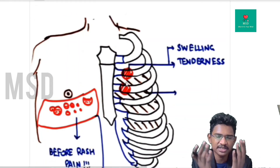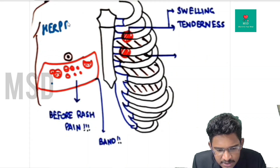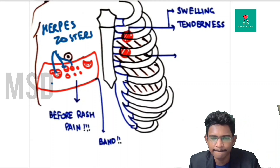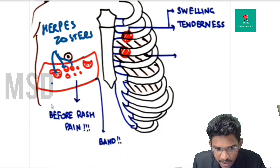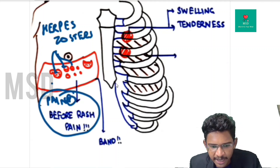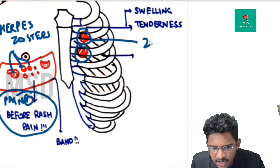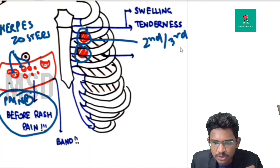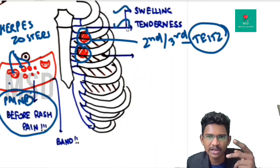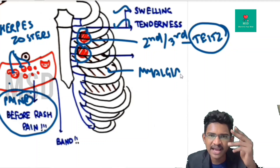Starting from external and skin causes: herpes zoster produces blisters and crusts over the skin causing chest pain, and characteristically the pain occurs even before the rash appears. Tietze syndrome is idiopathic swelling of the costochondral junctions — the second and third — with swelling and tenderness. This is localized and differentiates it from myocardial pain. Myalgias can also produce chest pain with tenderness.